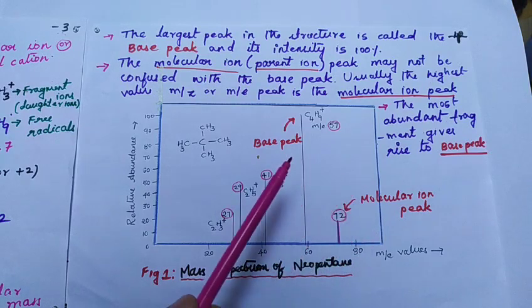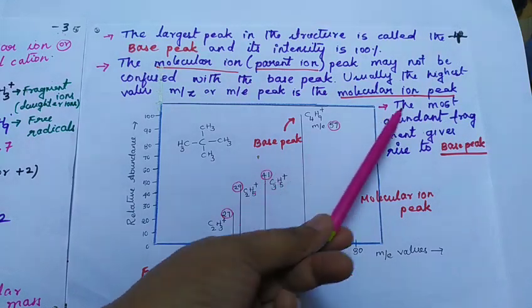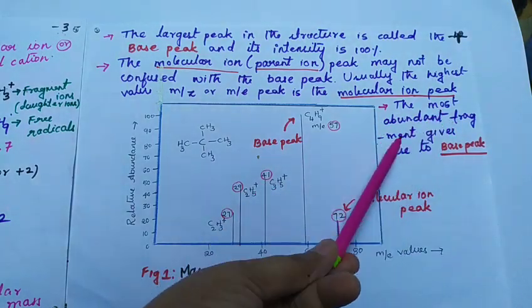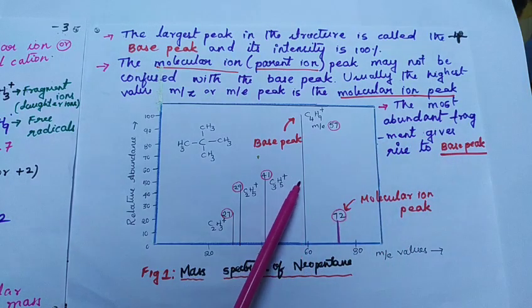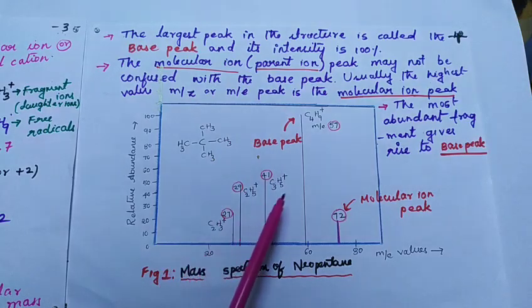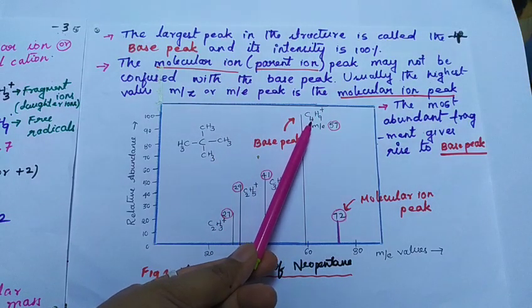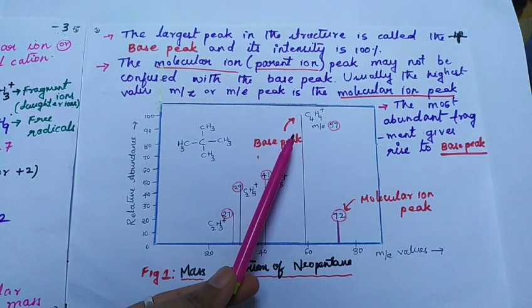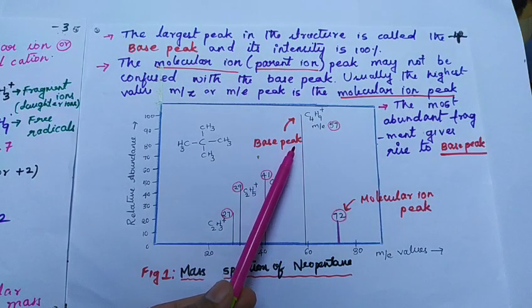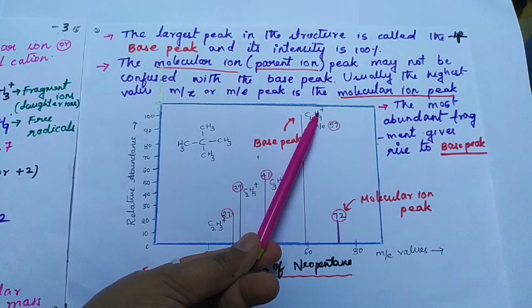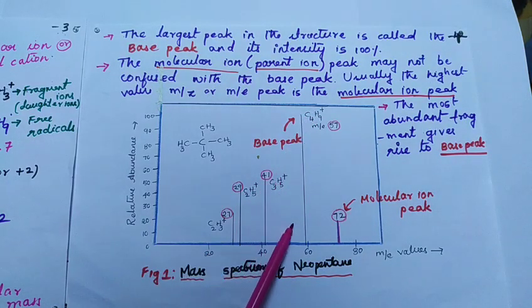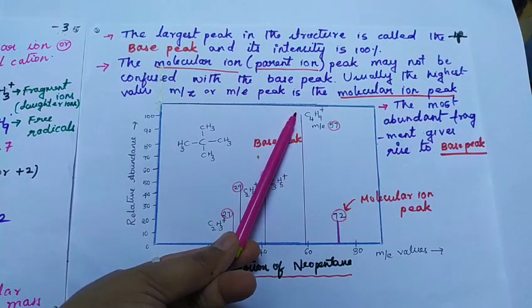Now let us understand what is a base peak. The most abundant fragment gives rise to the base peak. When neopentane undergoes fragmentation, the C4H9+ fragment has intensity of 100%. That is why the base peak of the C4H9+ cation is the largest peak. The largest peak in the structure is called the base peak and its intensity is 100%.